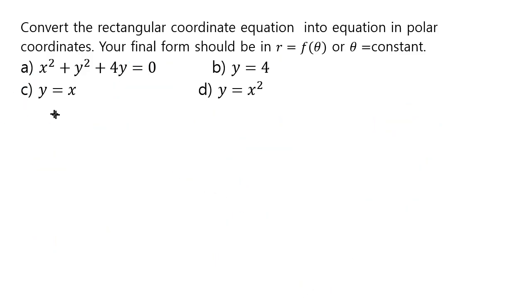And then for d, again we use that y is r sine theta and x is r cosine theta. So the right side will get you r squared cosine squared theta, whereas the left side is r sine theta.